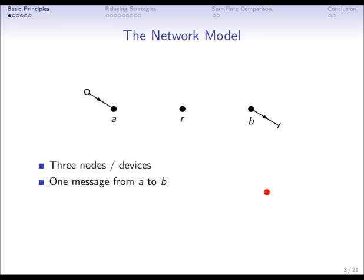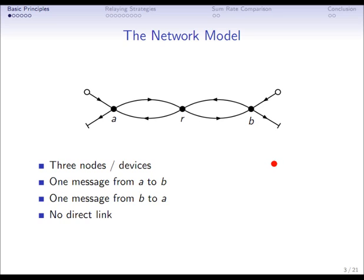The network model itself is pretty simple. Just imagine that you have three nodes or think of three wireless devices. You want to get one message from node A to node B and one message from B to A. So we want to do a message exchange. The thing is that there is no direct communication link between those devices. That means that the relay here becomes the enabler of communication. Any flow of information has to pass through this relay.